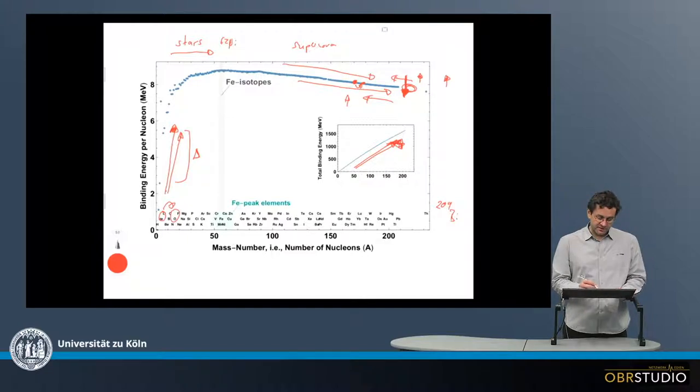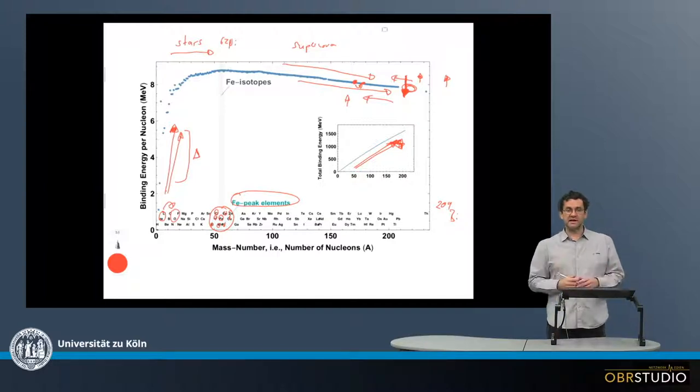Now finally, there's something that's called the iron peak elements, and these are roughly these elements here. So, of course, iron, chromium, vanadium, titanium, manganese, nickel, cobalt, zinc, copper. So, around, these are the iron peak elements. And they are sometimes referred to as the iron peak elements.